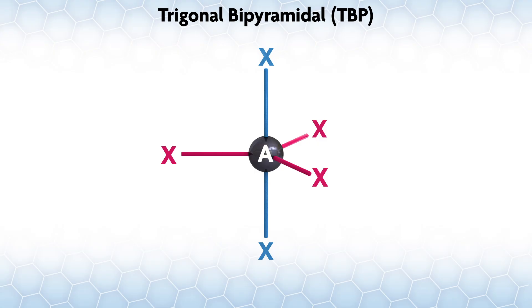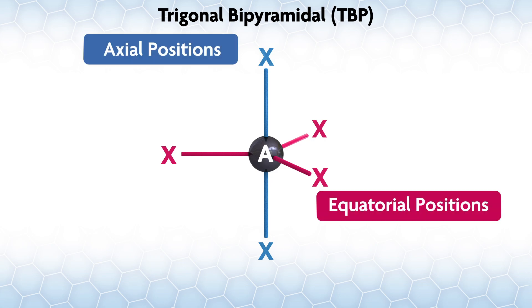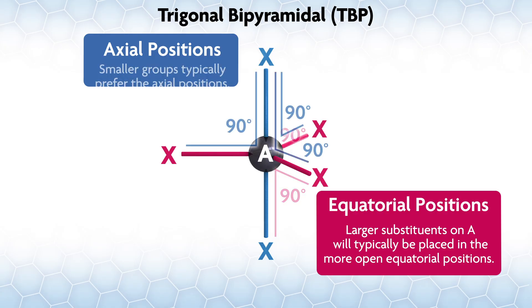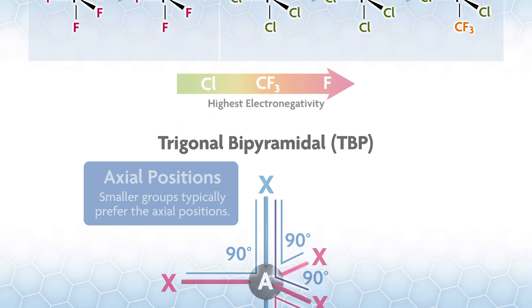There are some base structures that, unlike tetrahedral and octahedral, have different types of positions within the geometry, like trigonal bipyramidal or TBP for short. In TBP we have axial positions and equatorial positions. The larger substituents on A will typically be placed in the more open equatorial positions. These positions are 90 degrees to only two groups, giving them more open angle for the larger groups.